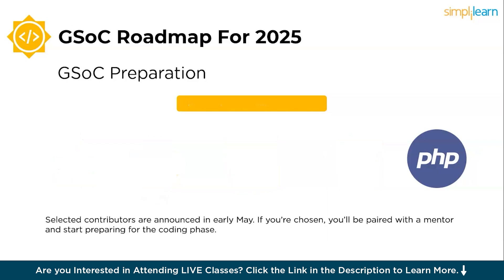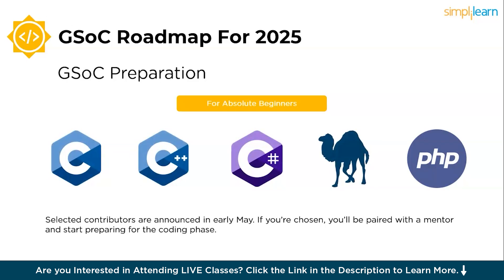If you are new to coding, you can still participate in GSOC by focusing on smaller projects that require basic programming knowledge. Many open-source organizations welcome beginners who are enthusiastic and willing to learn. Start with beginner-friendly languages like C, C++, C#, and Perl. Perl is used for text processing and scripting and is great for automating tasks. PHP is widely used for building dynamic web pages and backend services. C, C#, and C++ are fundamental languages used in various domains for system programming and game development. With a grasp of programming basics, problem solving, and project collaboration, even beginners can contribute meaningfully to smaller GSOC projects.